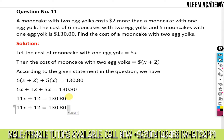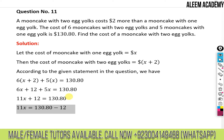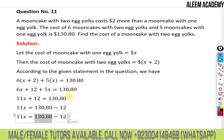Moving 12 to the other side: 11x = 130.80 minus 12. Using the calculator, 130.80 minus 12 equals 118.8. So 11x = 118.8.